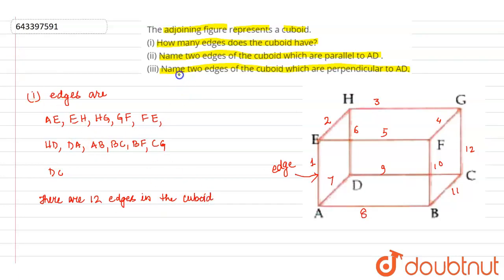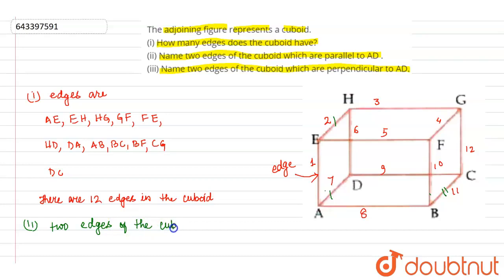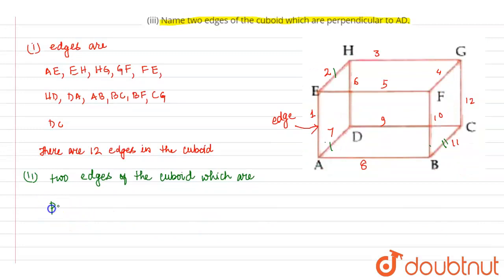Now question number 2: name two edges of the cuboid which are parallel to AD. So this is AD. Two edges parallel to AD are EH and BC.